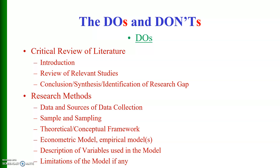Before the econometric or empirical model, we also need to give the theoretical or conceptual framework. We then give our empirical model that we are going to estimate. After giving the model, we describe our variables — defining them, stating their units of measurement — in a way that must be easily understandable for the reader. Finally, we may give limitations of the model if there are any.